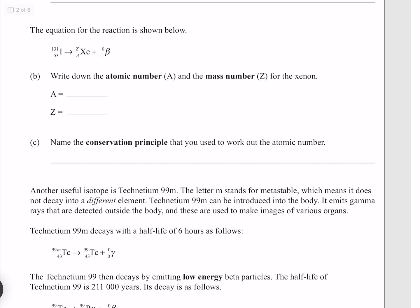The equation for the reaction is shown below. Write down the atomic number and the mass number for the xenon. Beta decay does not change the mass number because it involves a neutron turning into a proton and electron, so the amount of nucleons stays the same. So our mass number of 131 for iodine is going to be the same for xenon.